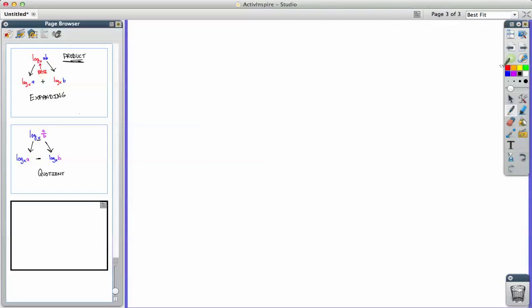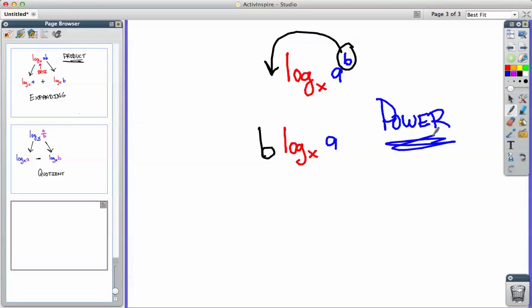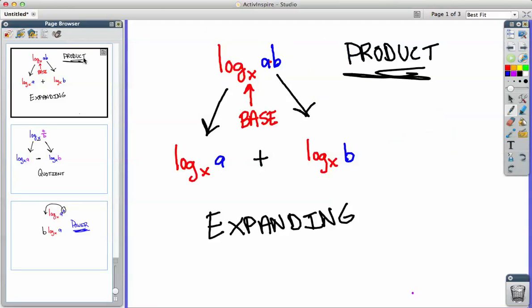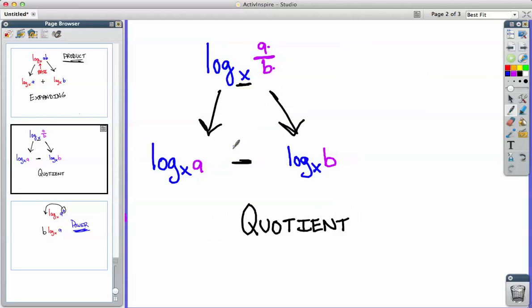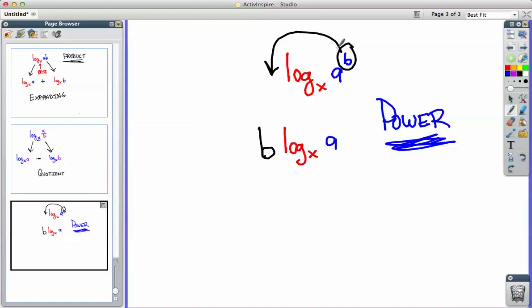And there's one more property that we should probably talk about. So let's say again we have log of x. But this time let's say we have, instead of a times b, let's say we have a to the power of b. You can rewrite this equation by taking the b and putting it at the beginning of the equation. So we have b log of x a. And that is another way to write it. And that is known as the power property. So you have the product property where you split them up and add. So if it's multiplication you add. If it's division you subtract. And if there's a power up here you can move the power over to the beginning of the equation.